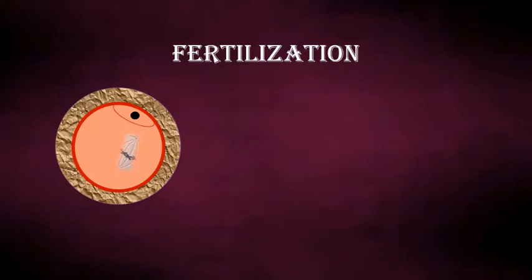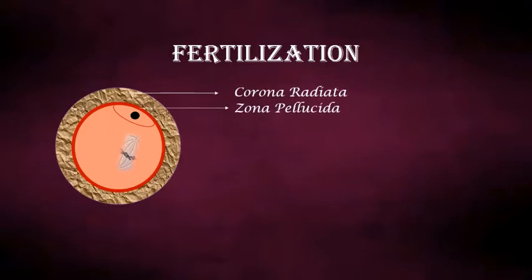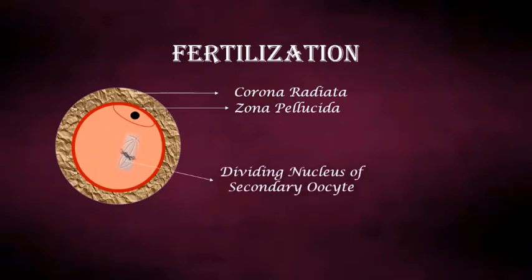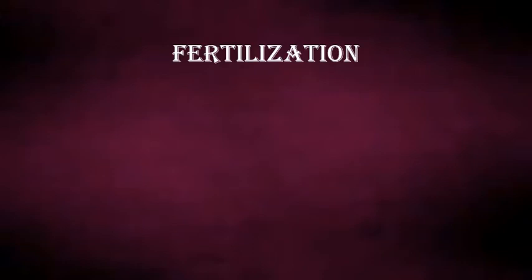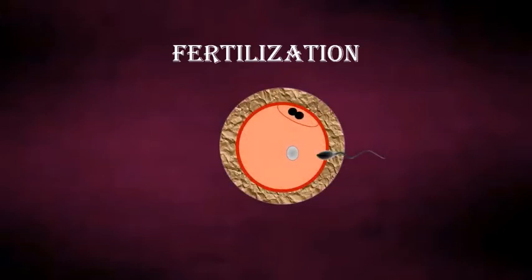The ovum has two layers: corona radiata and zona pellucida. Inside the zona pellucida is the larger secondary oocyte with the nucleus arrested at metaphase 2, and a smaller polar body. The entry of the sperm causes two kinds of changes. As the sperm cell membrane fuses with the cell membrane of the secondary oocyte, the nucleus of the secondary oocyte completes its division, forming the haploid egg nucleus and a second polar body.